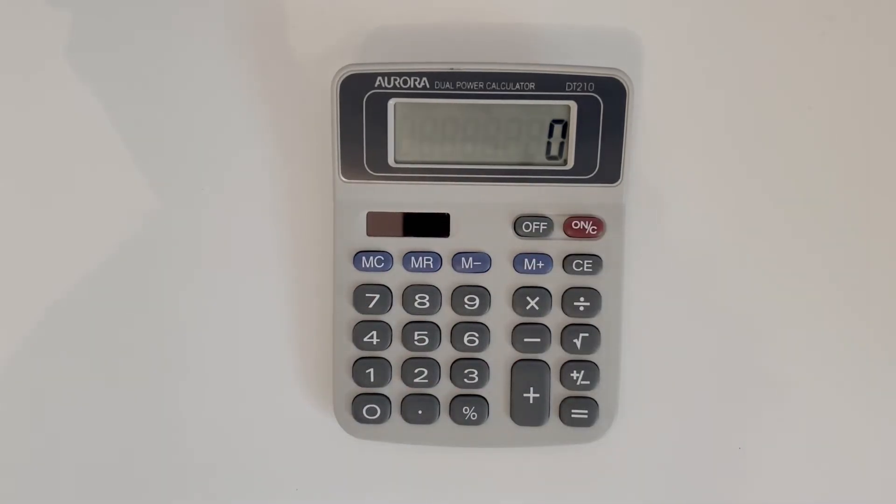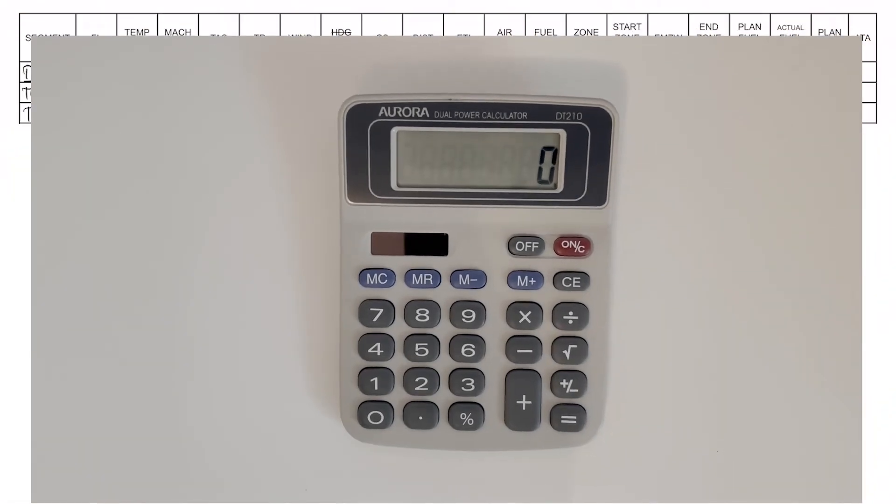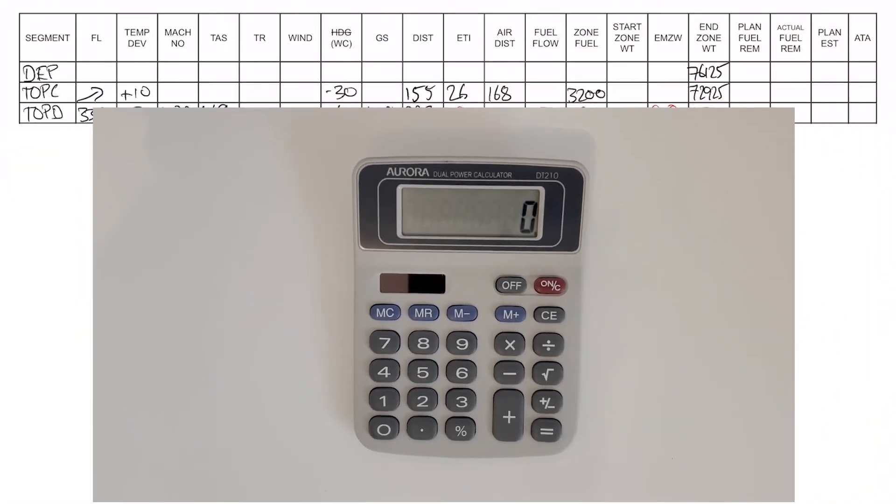Let's look at how we use this as part of a flight plan. We have the same flight plan here and we're going to do the cruise leg. We'll start by finding the estimated mid-zone weight, which we calculated as 68 tons.